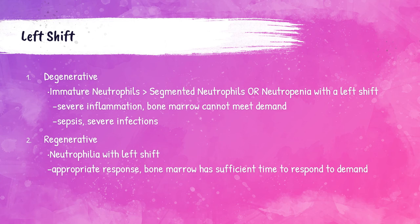The next type is a regenerative left shift. This occurs with neutrophilia — an increased level of neutrophils in the peripheral blood — along with immature neutrophils in the peripheral blood. This is considered an appropriate response, where the bone marrow has sufficient time to respond to the demand. It is the bone marrow doing what it's supposed to do: generating neutrophils at the correct pace to keep up with whatever demand is occurring in the body.